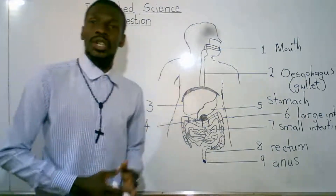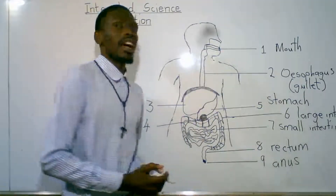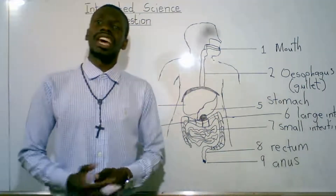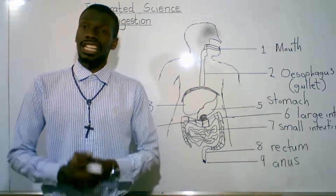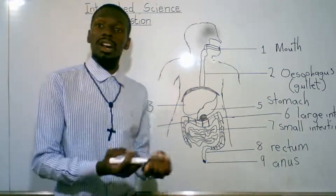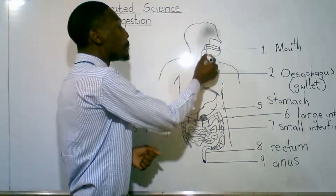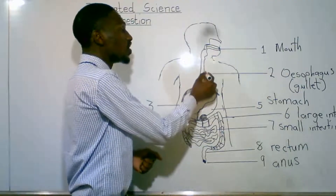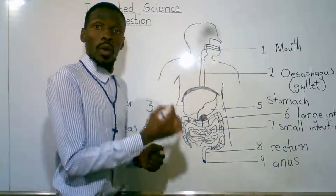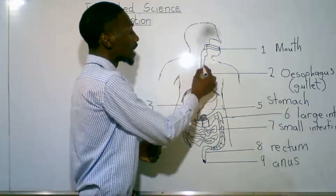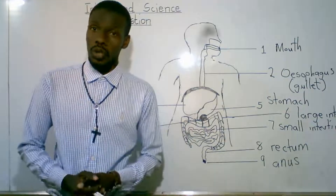Let's go into more detail. In the mouth, food is mixed with saliva that is produced by the salivary glands. Then boluses are formed. These boluses are pushed into the gullet. The process where food is pushed from the gullet to the stomach is known as peristalsis.